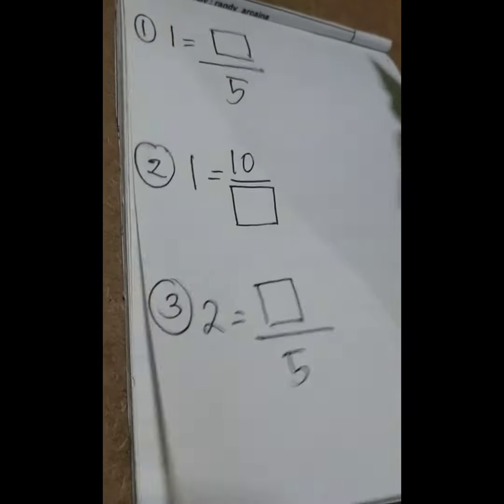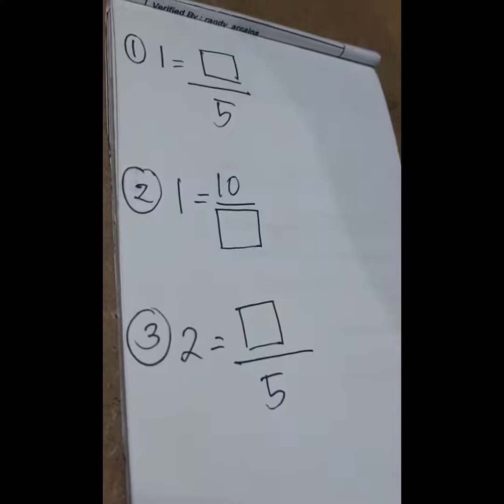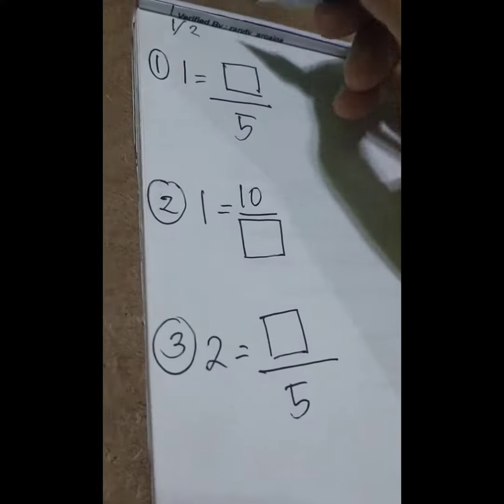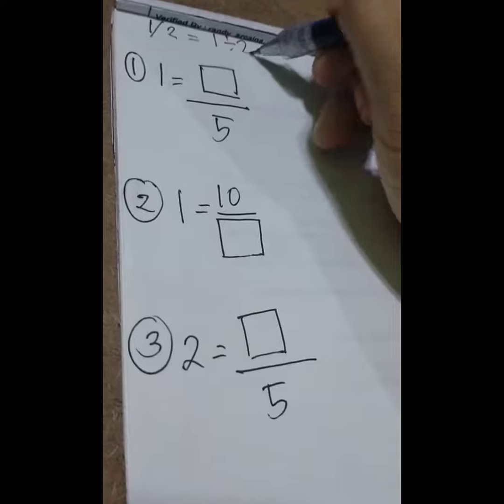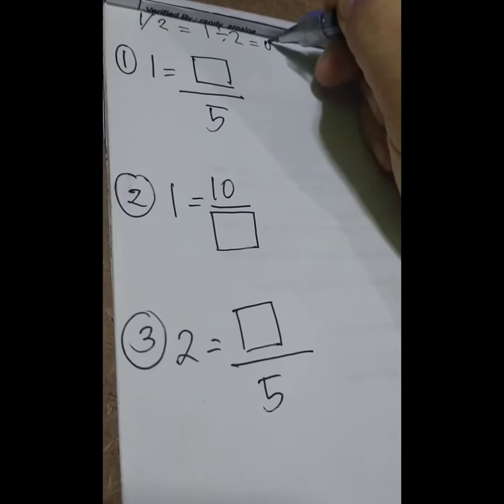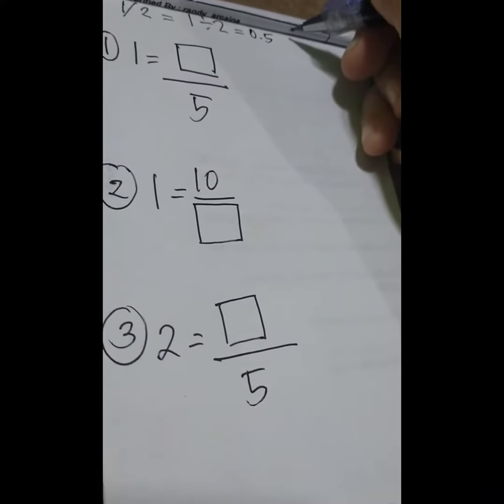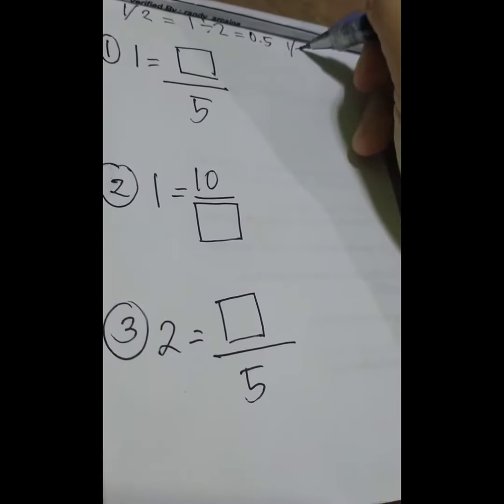Itong fraction, parang division din yan. Diba, one half pwede mong i-interpret na one divided by two equals 0.5. Yung 0.5 na yan, diba, parang 50 cents. Ibig sabihin yan, one half. Parehas lang siya.